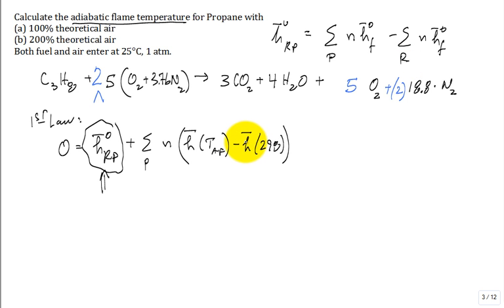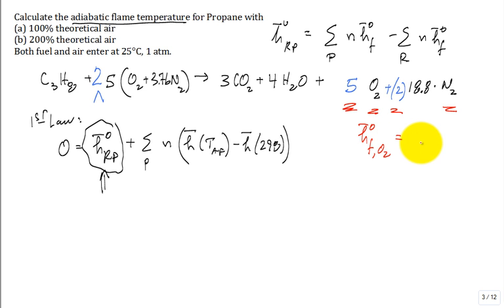If you have more air, it increases the amount of oxygen and nitrogen that go out in the products. But the enthalpy of formation of oxygen and the enthalpy of formation of nitrogen are both zero. So the amount of oxygen and nitrogen, either as reactants or as products, doesn't matter. This quantity is really only for the fuel, not for excess or deficient air.